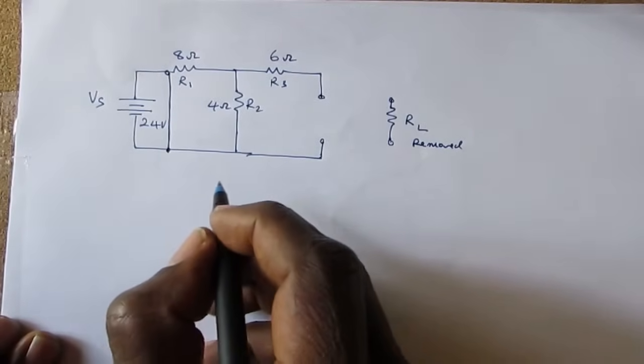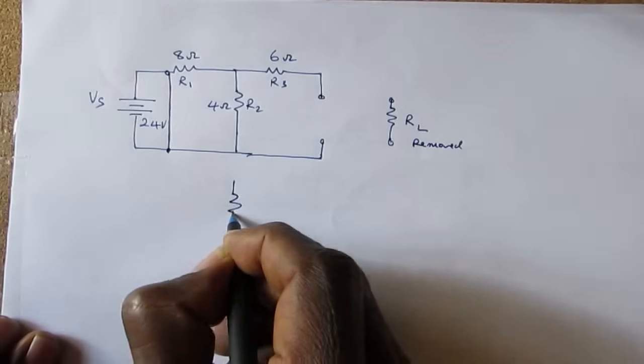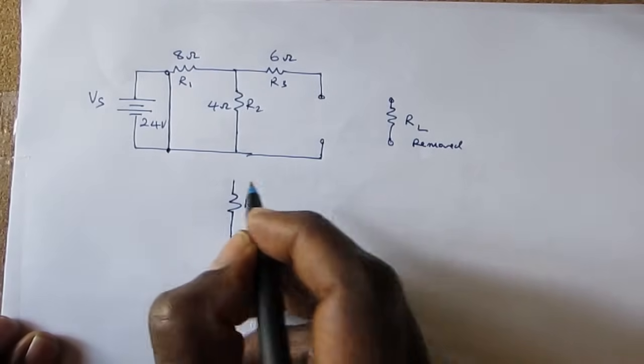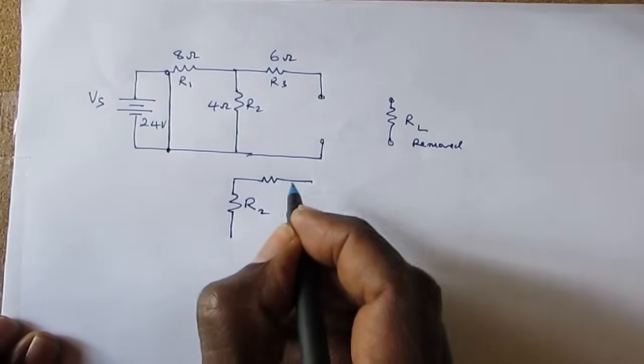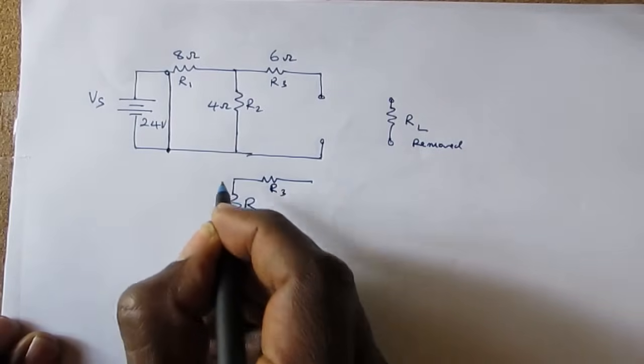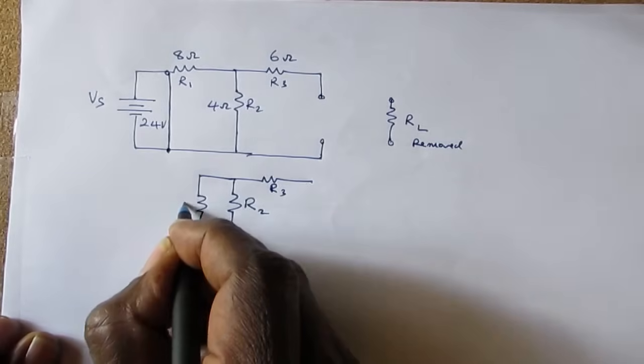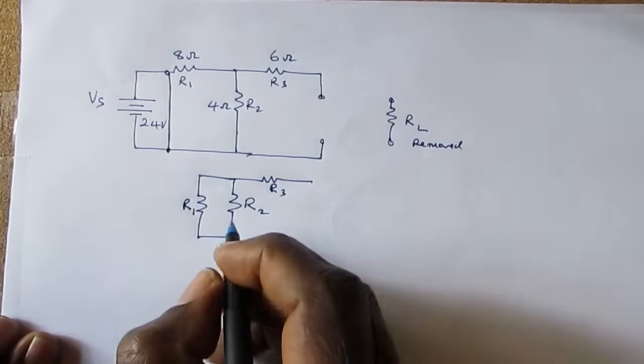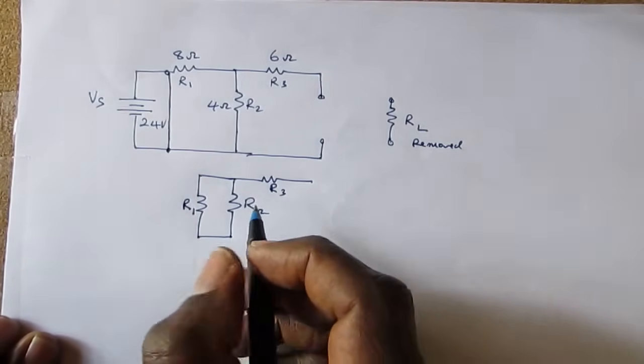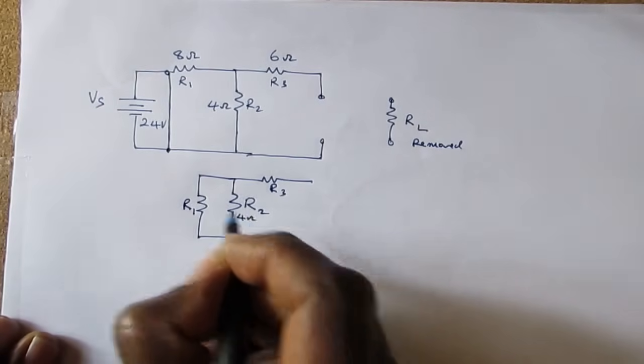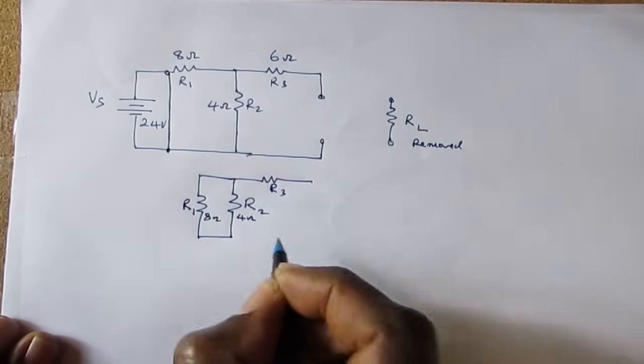So now we have R2, we still have R3, now we have R1 in parallel with R2. R2 is 4 ohms, R1 is 8 ohms.